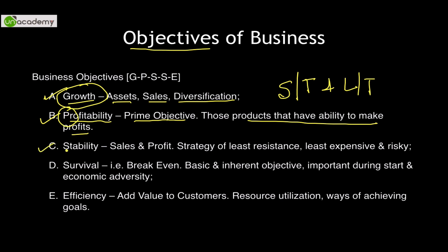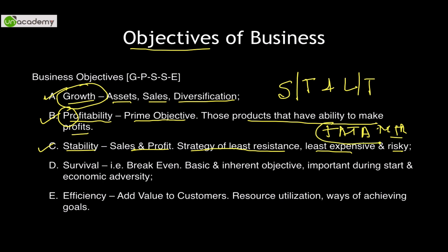Third: stability. As soon as one achieves a certain level of sales and profit, they are more oriented towards maintaining it — that is stabilizing it. This is a strategy of least resistance. It's least expensive and risky. Tata Motors has achieved a growth strategy with cars like Indica, Indigo, etc., and now they are trying to maintain stability of their automobile unit.